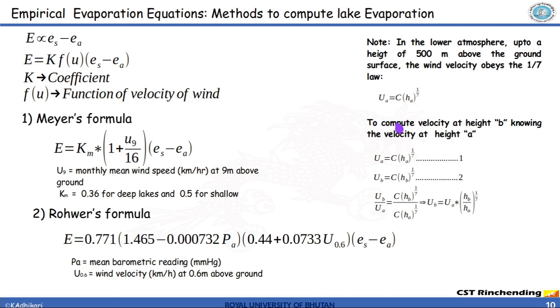To convert or extrapolate velocity to a different height, power law is used which states that the velocity at any height is equal to coefficient times height raised to power 1 by 7.